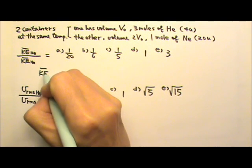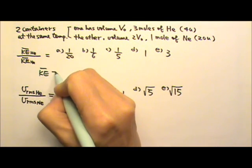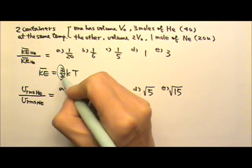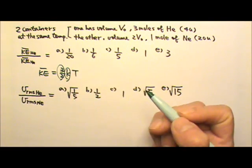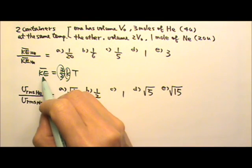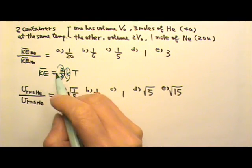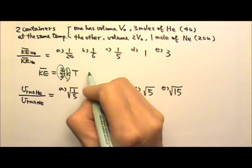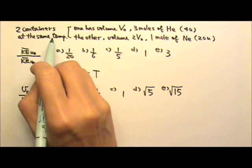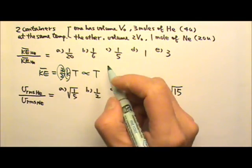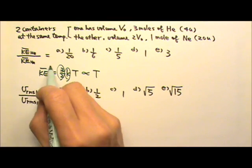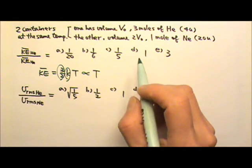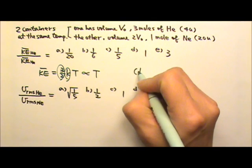The average kinetic energy is three-halves kT. Three-halves and k are always constants, so average kinetic energy is only proportional to temperature. Since the temperature is the same for both gases, the average kinetic energy is the same for both. Therefore the answer is d.